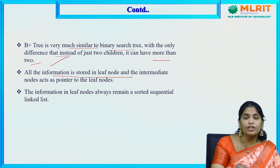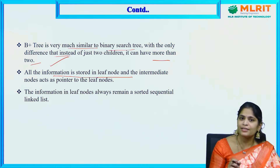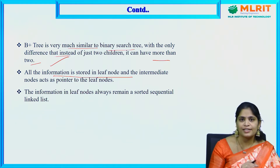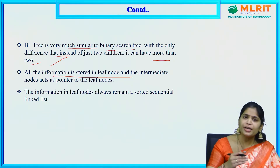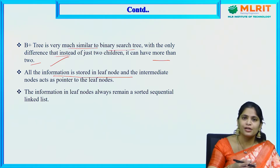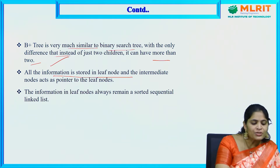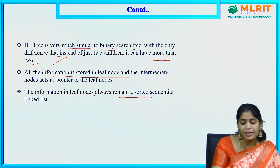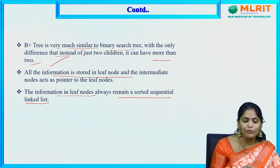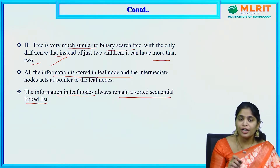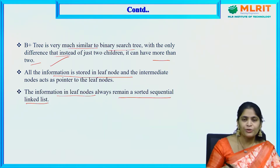All the information is stored in the leaf nodes, and the intermediate nodes act as pointers to the actual data. Whatever data we are going to store will be available in the leaf nodes, that is the last level. The intermediate nodes — the levels before leaf nodes — act as pointers to the actual data, to the leaf nodes. The information in the leaf nodes always remains in a sorted sequential linked list.